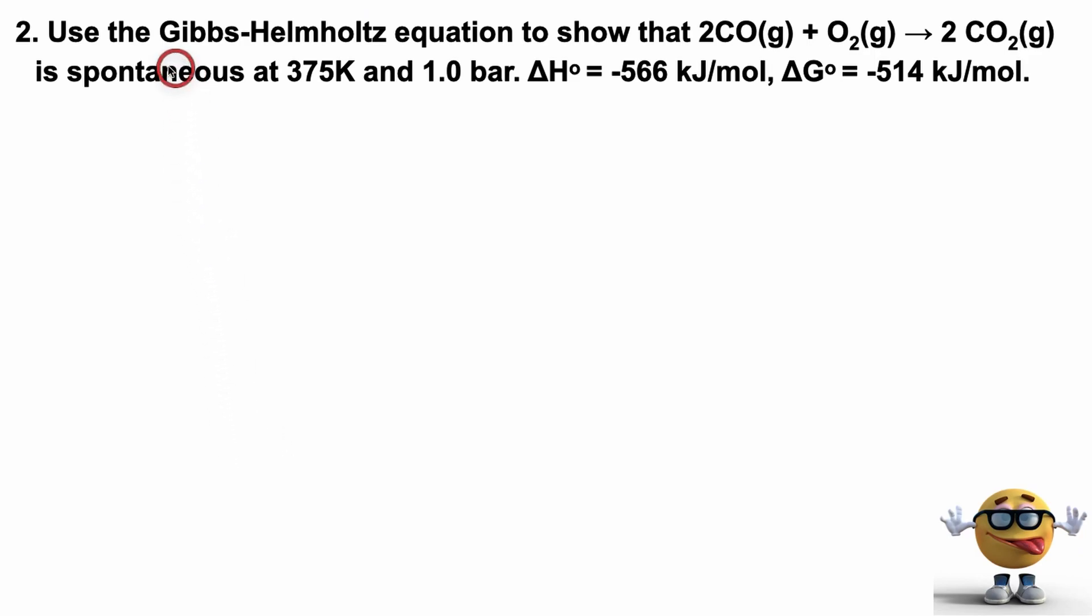Now we'll solve a common exam problem. And we'll use the Gibbs-Helmholtz equation to show that this chemical reaction right here, 2CO gas plus O2 gas goes to 2CO2 gas. You can plug in whatever equation you need. It's spontaneous at 375 Kelvin and one bar, and we're given the change in standard enthalpy, which is negative 566 kilojoules per mole, and the change in standard Gibbs energy, which is negative 514 kilojoules per mole.